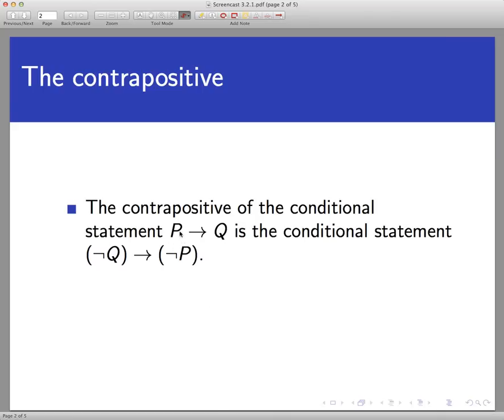The contrapositive of a conditional statement, if P then Q, is the conditional statement, if not Q, then not P. So to form the contrapositive, remember we're going to switch the conclusion and the hypothesis of the original statement and negate each.